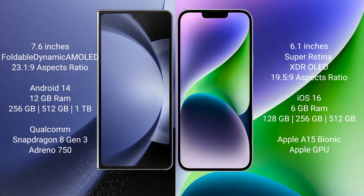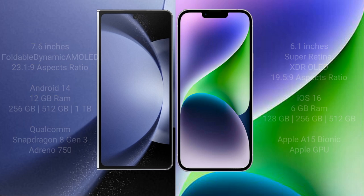Samsung Galaxy Z Fold 6 comes with 12GB RAM and 256GB, 512GB, or 1TB internal storage, powered by a Qualcomm Snapdragon 8 Gen 3 processor and Adreno 750 GPU. iPhone 14 comes with 6GB RAM and 128GB, 256GB, or 512GB internal storage, with an Apple A15 Bionic processor and integrated GPU.